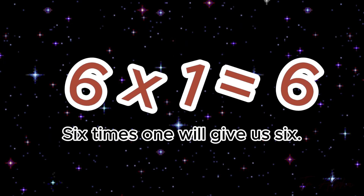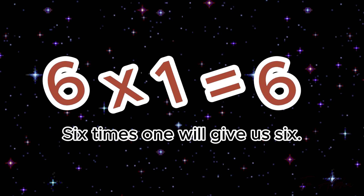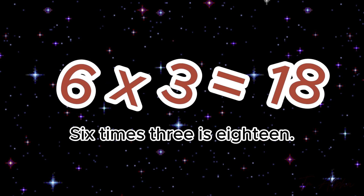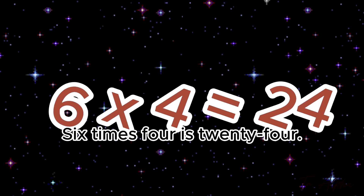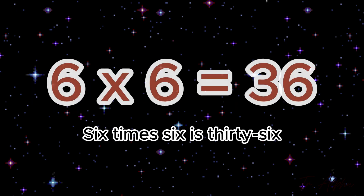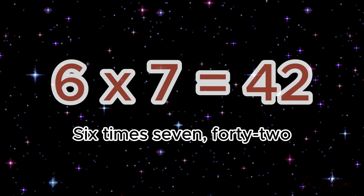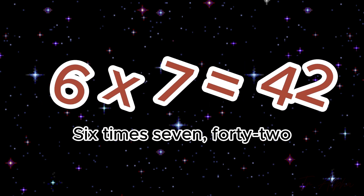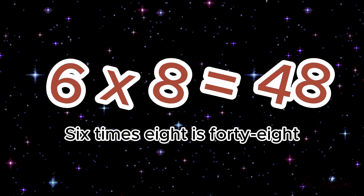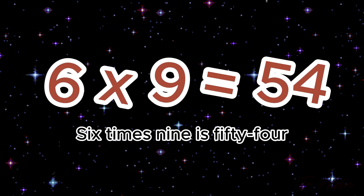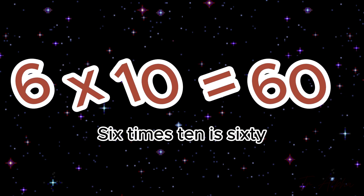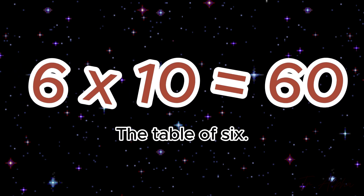6 times 1 will give us 6. 6 times 2 is 12. 6 times 3 is 18. 6 times 4 is 24. 6 times 5, 30. 6 times 6 is 36. 6 times 7, 42. Yes, it's 42. 6 times 8 is 48. 6 times 9 is 54. 6 times 10 is 60, the table of 6.